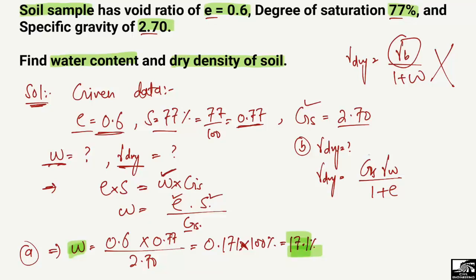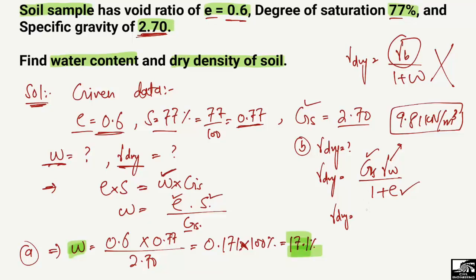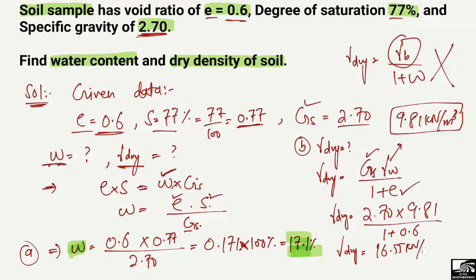In this equation, specific gravity Gs = 2.70 is known, gamma_W (unit weight of water) = 9.81 kN/m³ — a value to keep in mind — and void ratio E = 0.6 is known. Substituting: dry density = (2.70 × 9.81) / (1 + 0.6) = 16.55 kN/m³.